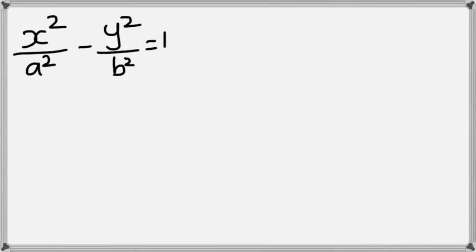So we have our general equation for a hyperbola, which is x squared divided by a squared minus y squared divided by b squared, and that equals 1.